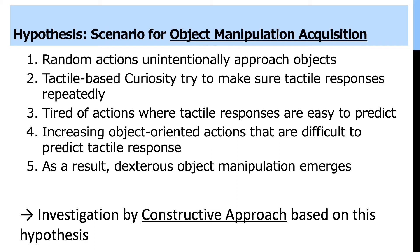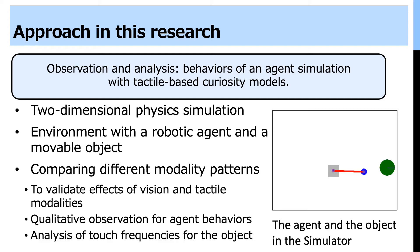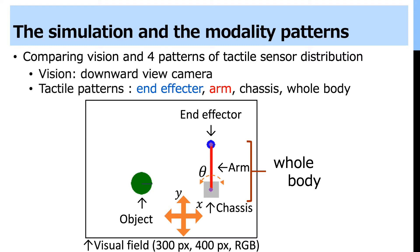Based on this scenario, we investigate this hypothesis through a constructive approach. The approach involves observation and analysis of behaviors of an agent in simulation with tactile-based curiosity models. The simulation is a two-dimensional physics simulation with a robotic agent and a movable object. To validate the effect of vision and tactile modalities, we compare different modality patterns. After the experiment, we observe agent behaviors qualitatively and analyze touch frequencies for the object.